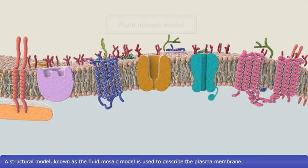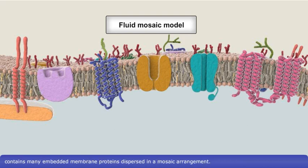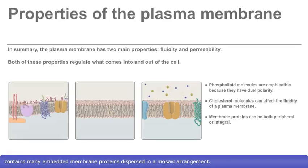A structural model, known as the fluid mosaic model, is used to describe the plasma membrane. According to this model, the constantly moving fluid lipid bilayer contains many embedded membrane proteins dispersed in a mosaic arrangement.